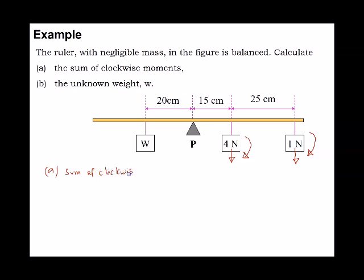To find the sum of all clockwise moments, I take the 4 newton force and multiply it by 15 cm. We do this because moment is given as force multiplied by the perpendicular distance. This gives the clockwise moment from the 4 newton force.